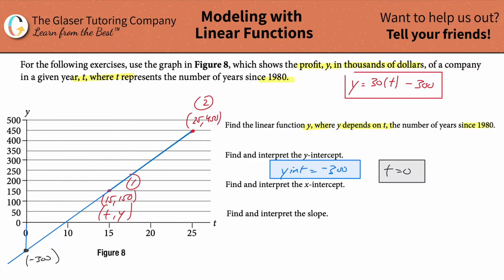Find and interpret the x-intercept. So the x-intercept now is where y is equal to zero. So the x-intercept will be somewhere in this particular location. So remember that the y value there is equal to zero. So I can use my linear model again.